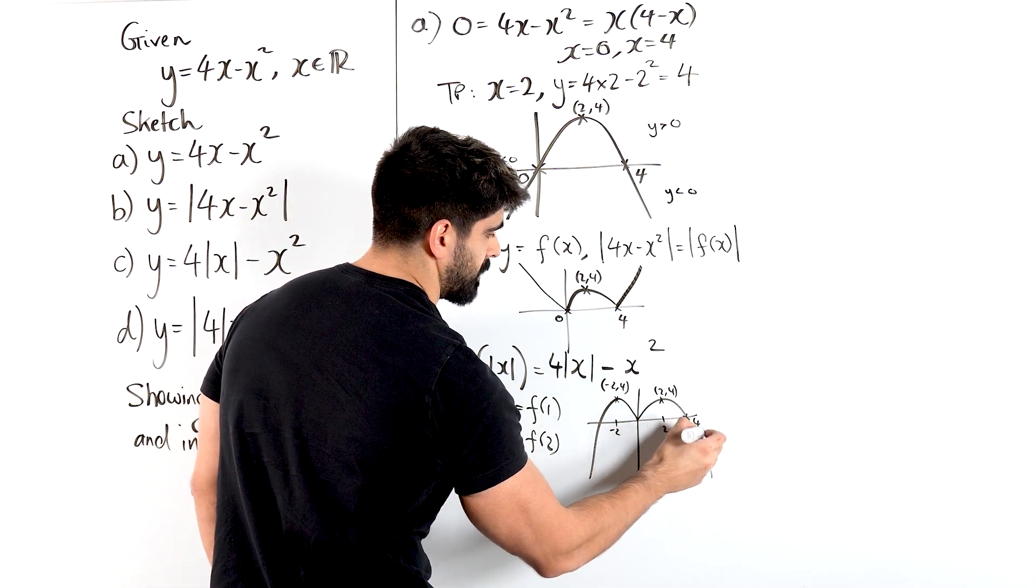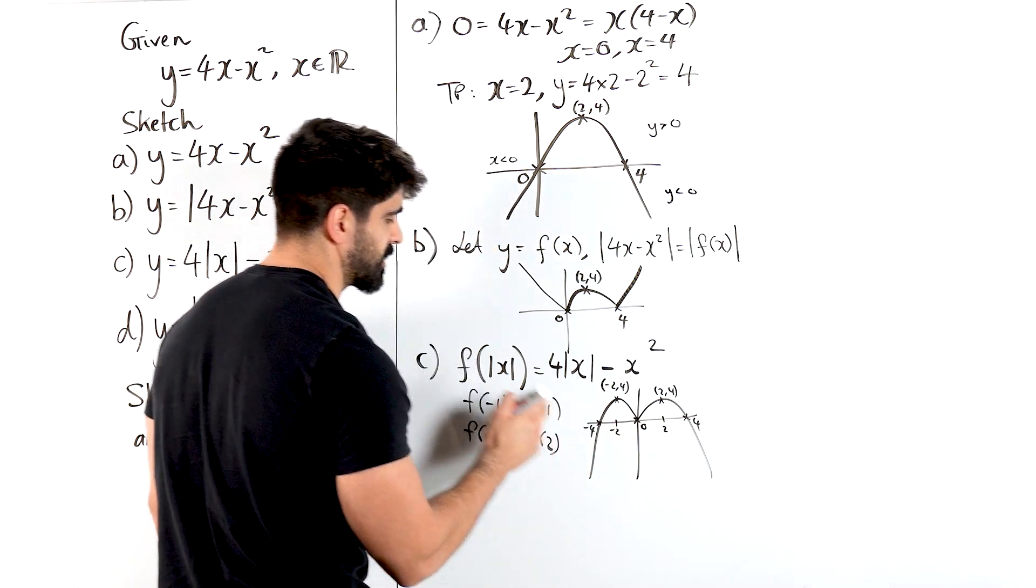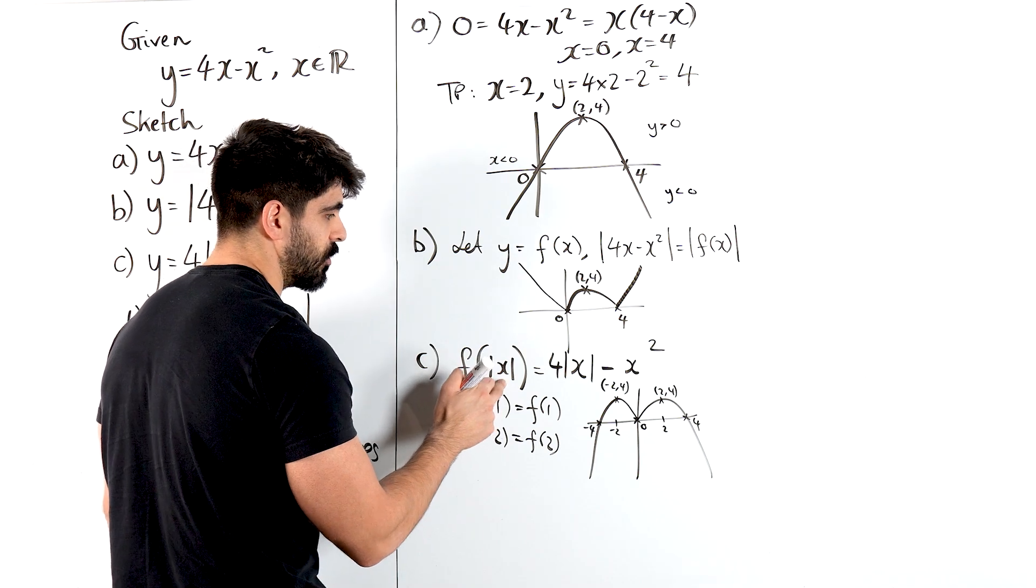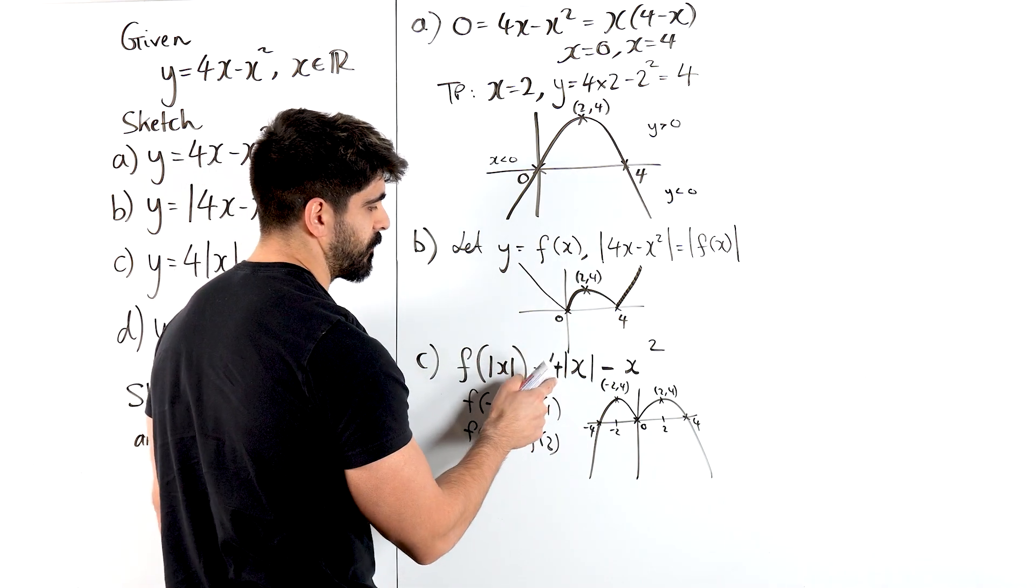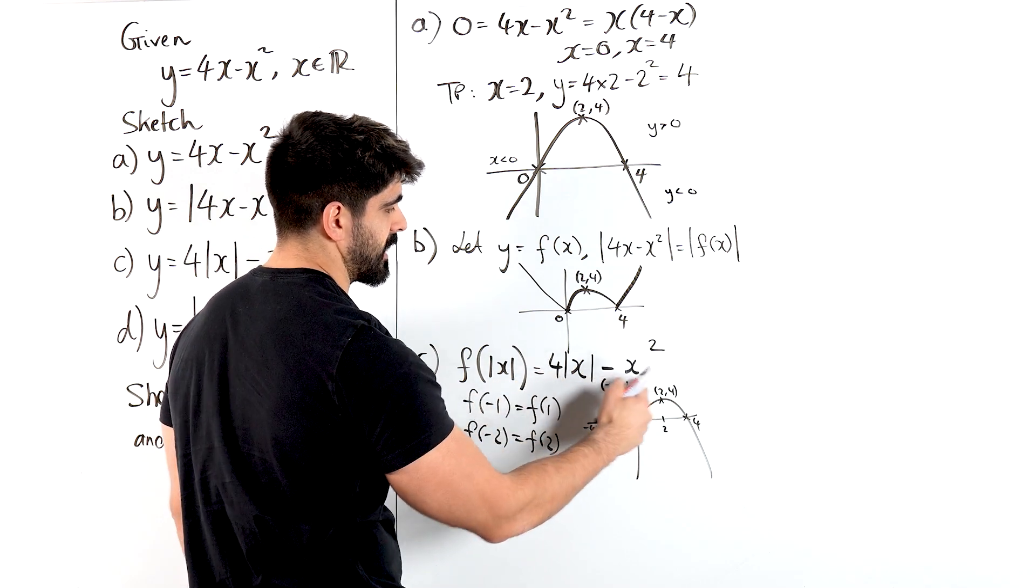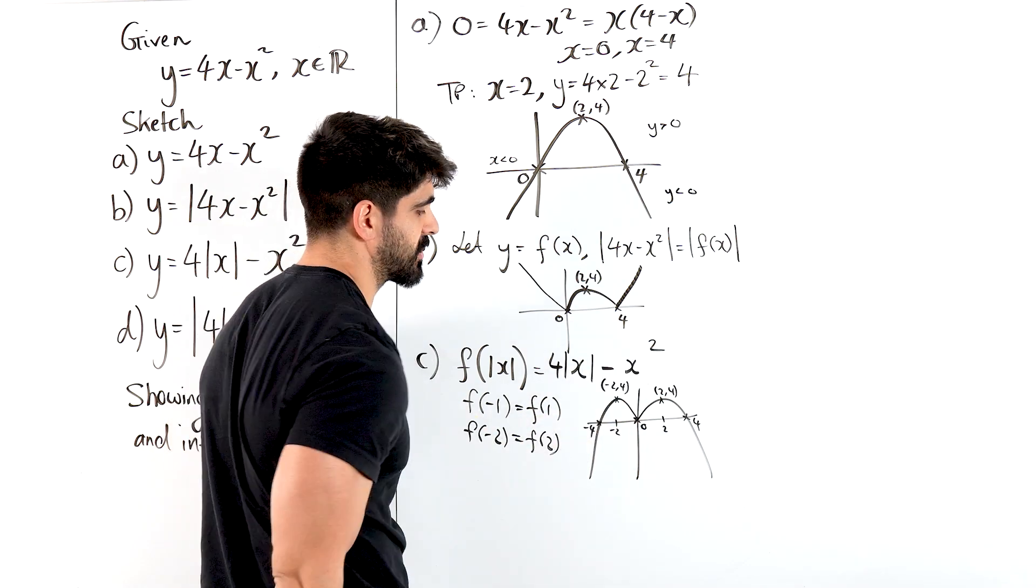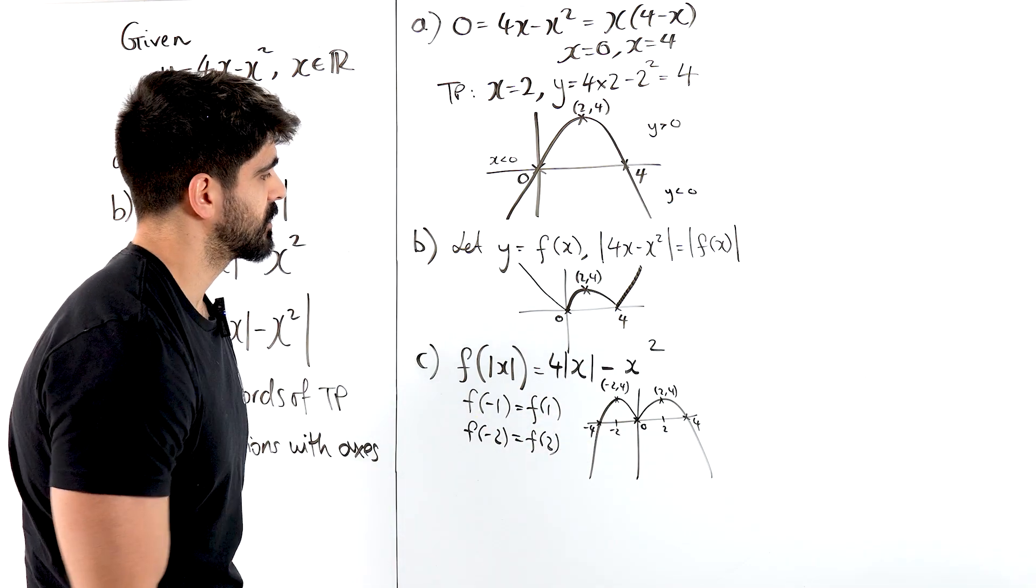This is 4, remember? Here we have 0, and here is minus 4. Because when you sub in minus 4, f of minus 4 is just the same as f of 4. 4 modulus minus 4 is 4 times 4 minus, then here, minus 4 squared is just 16. And it didn't matter if I had a modulus sign there or not. So there you go.